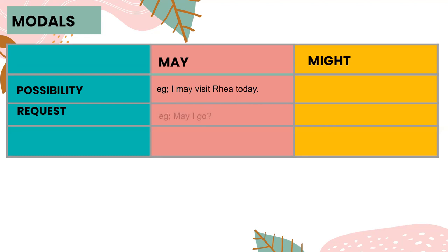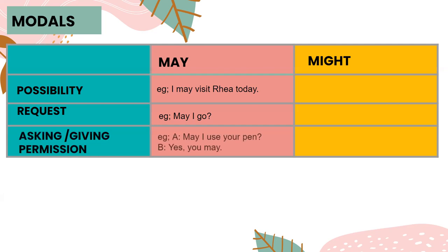May can also be used to make a request and ask permission. For example: May I use your pen? We're using may here because we are asking for permission. You can give permission by saying yes, you may. A native English speaker might just say yes, which is also completely fine.